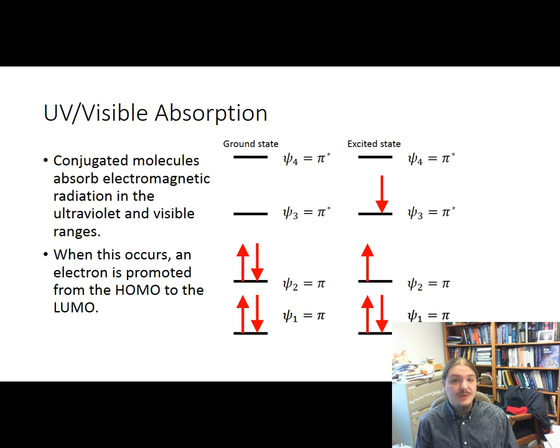Frontier molecular orbitals can also be used to help understand UV-visible absorption spectra. Conjugated molecules absorb electromagnetic radiation in the ultraviolet and visible ranges. Those energy differences correspond to the difference in energy between the HOMO and the LUMO. So when this occurs, an electron is promoted from the HOMO to the LUMO. And so my orbital diagram on the left represents the ground state of the molecule—every electron is in its lowest energy possible orbital. After it absorbs electromagnetic radiation, it can go to the excited state on the right, where one electron is now up into the orbital that used to be the LUMO.